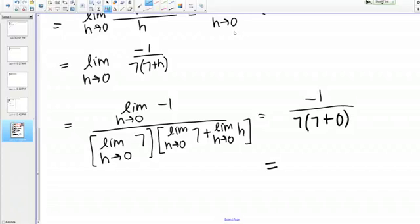That's negative 1 over 49 as our final answer.